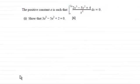Hi there. Now for this question we're given the positive constant a is such that the integral from a to 2a of 2x cubed minus 5x squared plus 4 all divided by x squared integrated with respect to x equals 0. And what we've got to show is that 3a cubed minus 5a squared plus 2 equals 0.